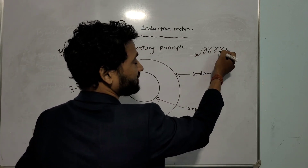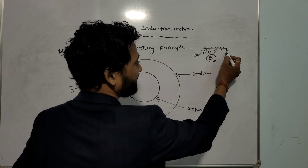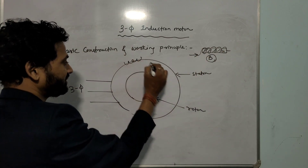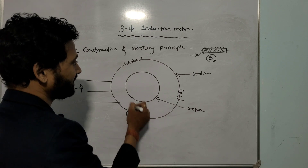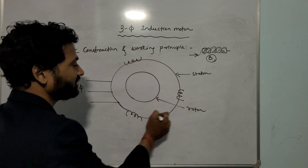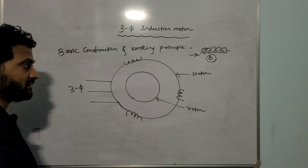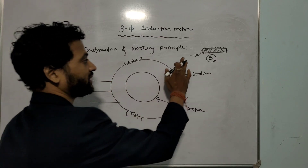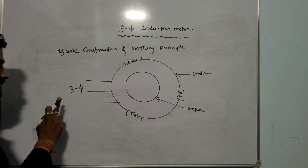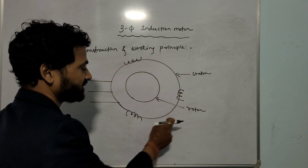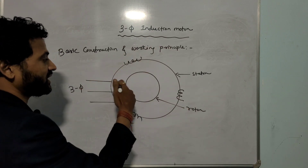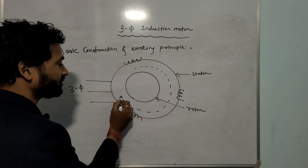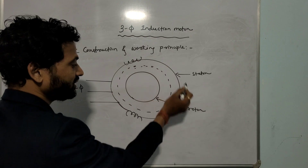Whenever current is given to a solenoid or coil, a magnetic field is developed — just like in Class 12 solenoid concepts. To strengthen that magnetic field, we can use a core. Similarly here, the three-phase winding has a 120-degree angular difference between consecutive coils, with a soft iron core made of silicon steel. The entire system will produce a magnetic field whenever energized from the 3-phase supply. When 3-phase supply is given to the stator winding, it will be energized and produce a magnetic field.